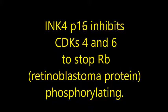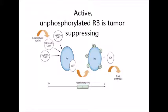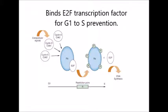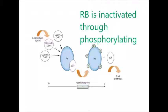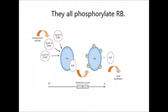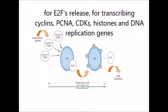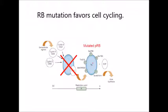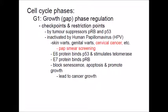INK4 inhibits CDKs 4 and 6 to stop RB phosphorylation. Active unphosphorylated RB is a tumor suppressor that sequesters E2F transcription factor, preventing G1 to S transition. RB is inactivated through phosphorylation by CDK 4 and 6 with cyclin D, and CDK 2 with cyclins A and E. They all phosphorylate RB for E2F release, enabling transcription of cyclin E, PCNA, CDKs, histones, and DNA replication genes. RB mutation favors cell cycling. Human papillomavirus E6 protein binds P53 and stimulates telomerase; E7 protein binds RB. This blocks senescence, apoptosis, and promotes growth, leading to cancer.